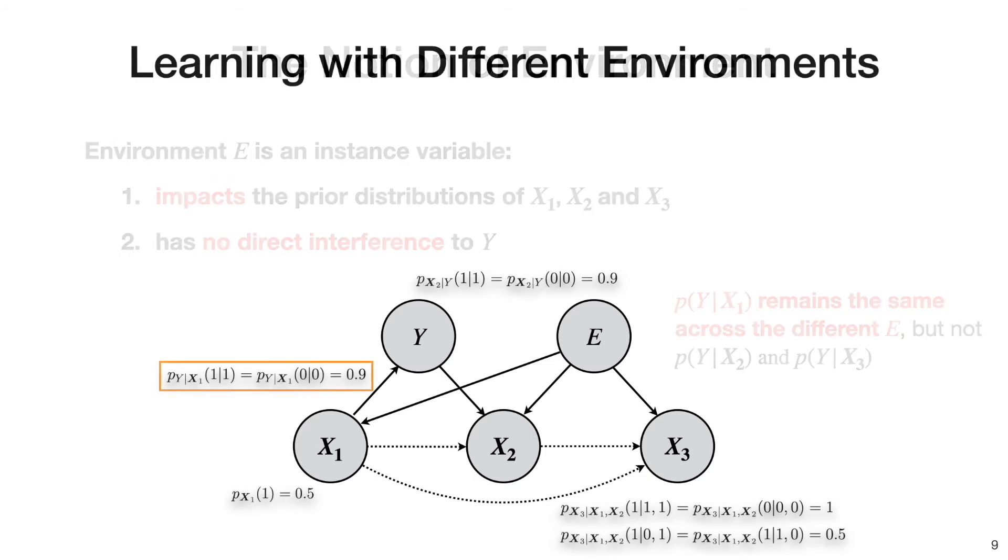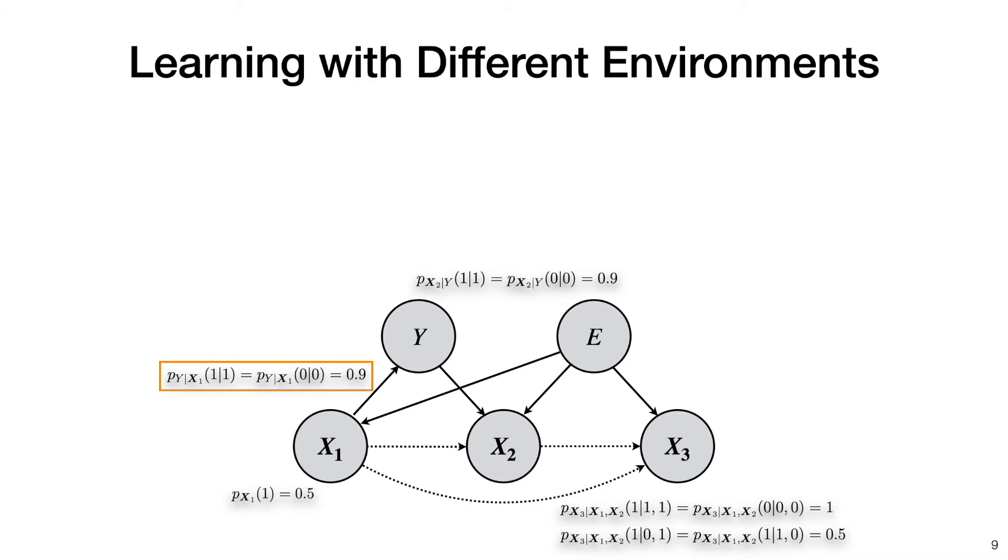To get a better idea, let's go back to the example where all the variables are binary. Now we assume there are two environments. Environment 1, all the probability distributions are exactly the same as the ones that are previously defined. In environment 2, all the probability distributions are almost the same, except that the prior probability of x1 being equal to 1 is changed from 0.5 to 0.6.